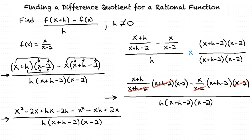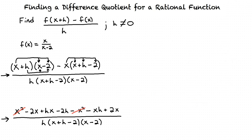Now we can simplify the numerator by combining like terms. We have an x squared minus an x squared, so these terms cancel. We also have an x times h minus an x times h, so these terms cancel as well. Finally, there's a negative 2x plus a 2x, so these terms cancel, and we are left with negative 2h in our numerator.